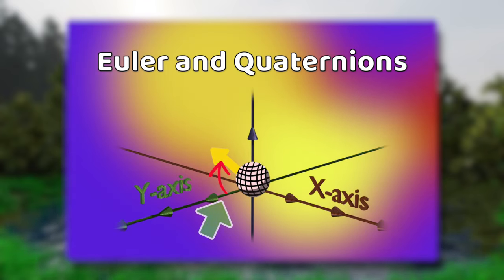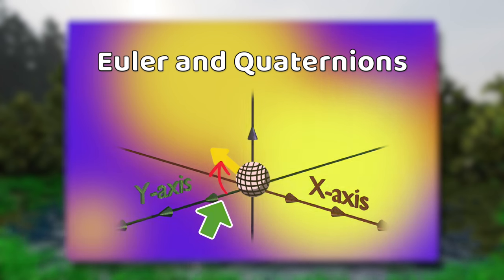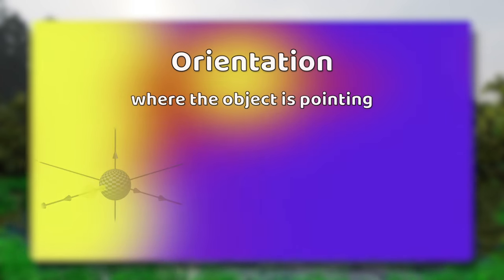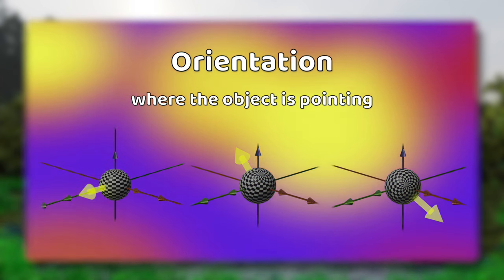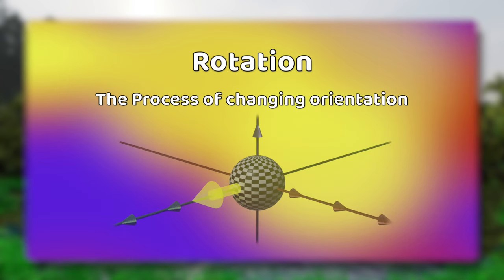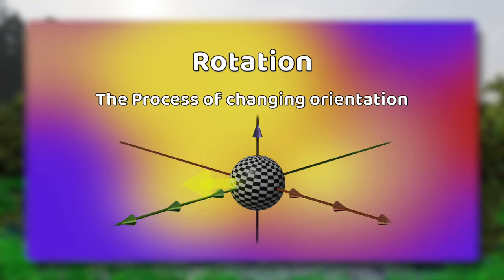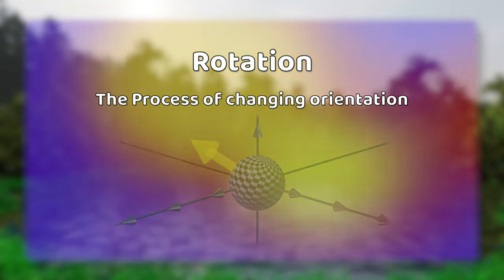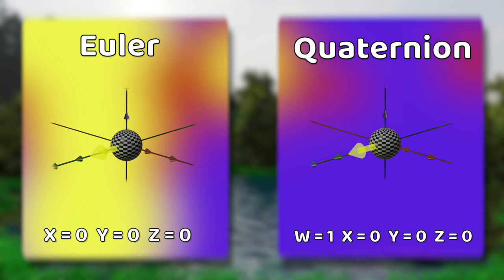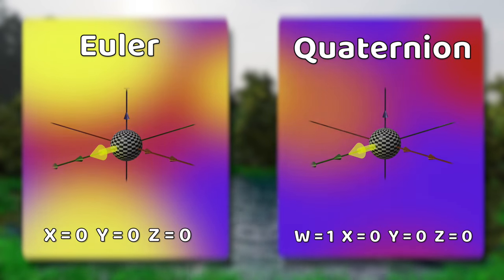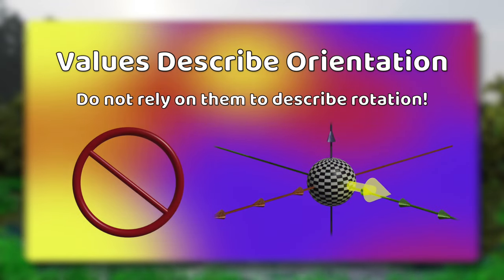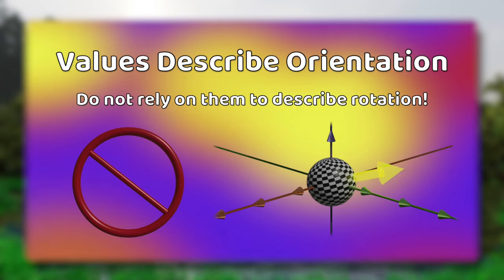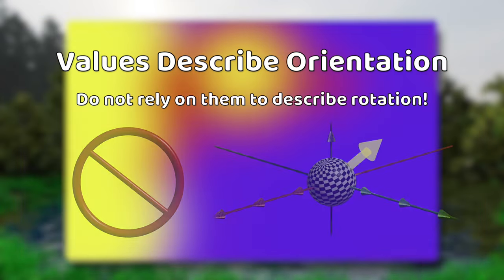Euler and Quaternions are a series of values that represent the angle between a subject and some reference point. This angle is called orientation — you can visualize it as where the object is pointing. Rotation is the process of changing between two orientations; it is the movement from one angle to another. Any set of Euler or Quaternion values represents a single orientation, and it's best to only think about these values as the orientation they represent.